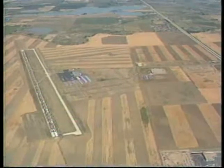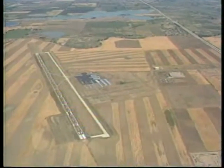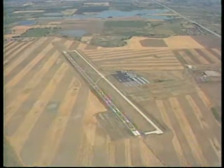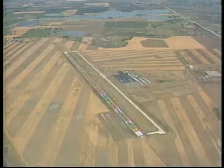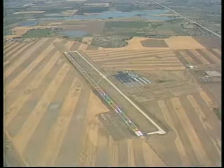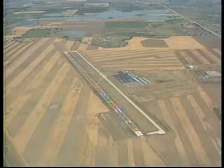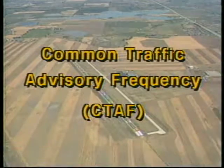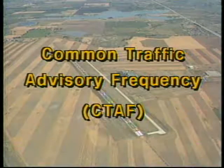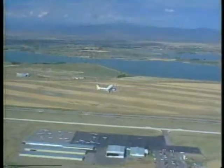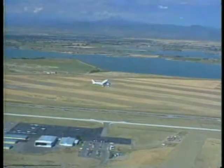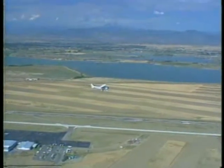Let's turn our attention now to general radio procedures. At each uncontrolled airport, one specific frequency is used to communicate your intentions or to receive information. This frequency is called the Common Traffic Advisory Frequency, or CTAF. You should continuously monitor and use this frequency when operating to or from an uncontrolled airport.